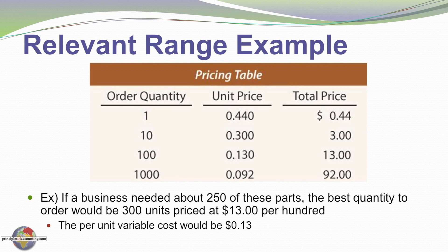Rather than ordering 10 units at a time 25 times, it would be much cheaper to order in units of 100. In this case, although I only need 250 units, I'm going to determine it's much cheaper to order 300 units at 13 cents a unit — $13 per 100, or a total of $39. That's the cheapest option to get access to 250 units; no other combination would give a lower total cost. So the variable cost per unit over my relevant range would be regarded as 13 cents per unit based on these calculations.